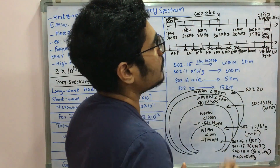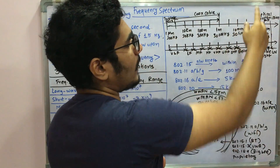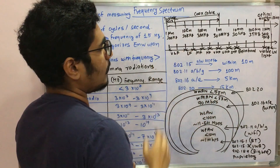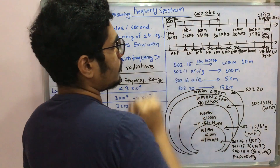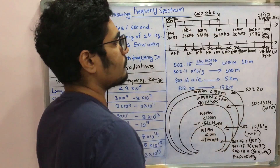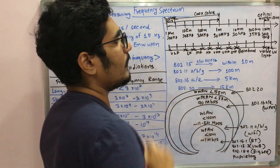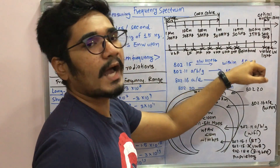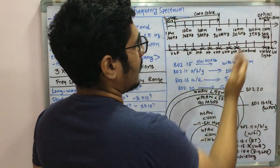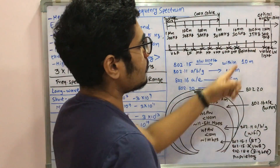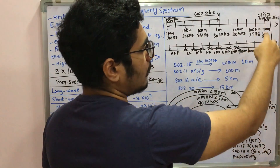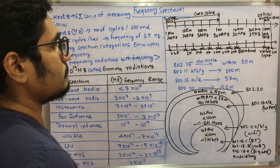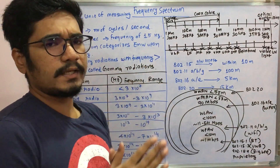At 100 micrometers we reach 3 terahertz, and at 1 micrometer we reach 300 terahertz, up to which optical transmission is possible. We also have VLF (very low frequency), LF, MF, HF, VHF, UHF, SHF, and EHF bands operating within this range up to 10 mm, and beyond that we have infrared, the visible spectrum, and ultraviolet rays.